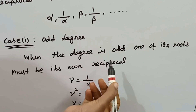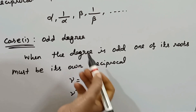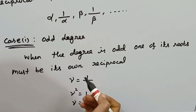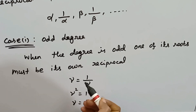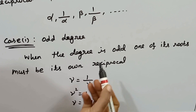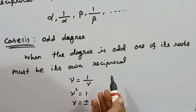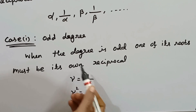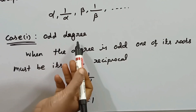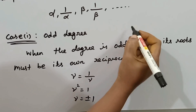The roots of a reciprocal equation with like sign occur in pairs. How we can convert or reduce the type of equation — even degree like sign is the standard form. In the first case, we consider the odd degree. For odd degree, we look at the highest power.